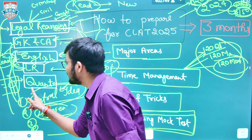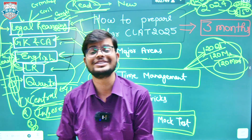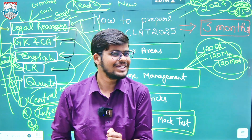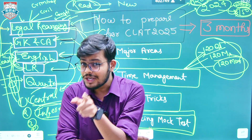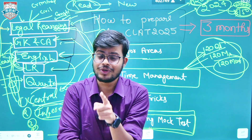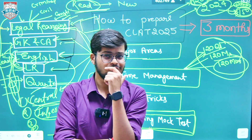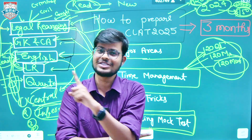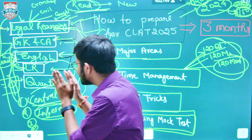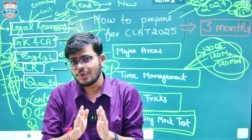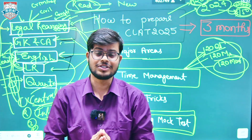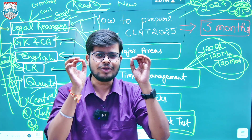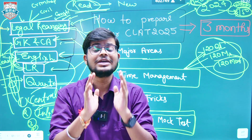Then there is quantitative aptitude, which has the least weightage in the examination. But that does not mean it is unimportant — it is equally important to score well in quantitative aptitude, otherwise you will lose an opportunity to get into the top NLUs. If your goal is to get into top NLUs, you cannot afford losing any part. To be efficient in the quantitative aptitude section, you need to focus on data interpretation, because since 2019 the questions in the examination are completely based on data interpretation.